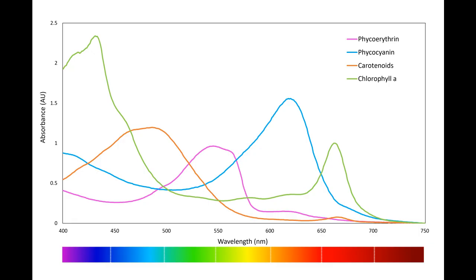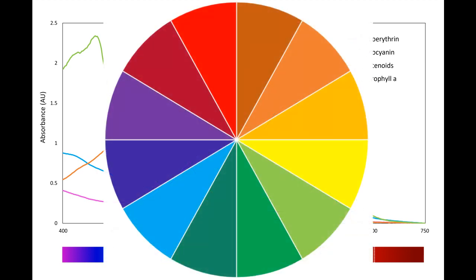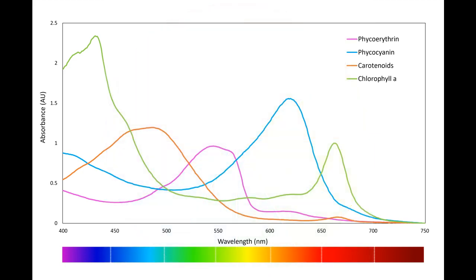Each pigment absorbs light at different wavelengths. The colour we see is the colour that the algae reflect back, which is opposite on the colour wheel to the colour being absorbed. For example, phycocyanin appears blue because it reflects blue light, whilst orange wavelengths are being absorbed.